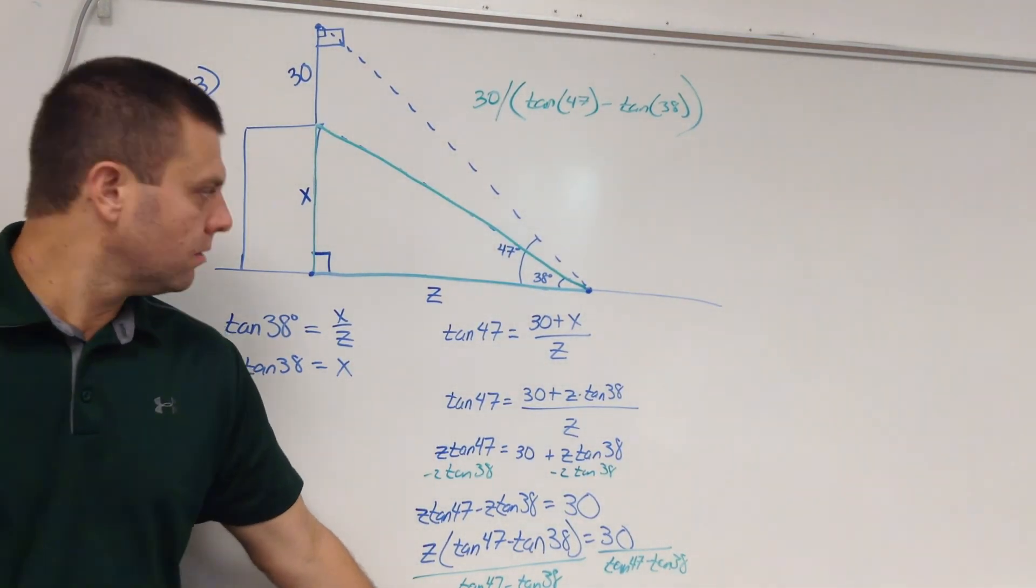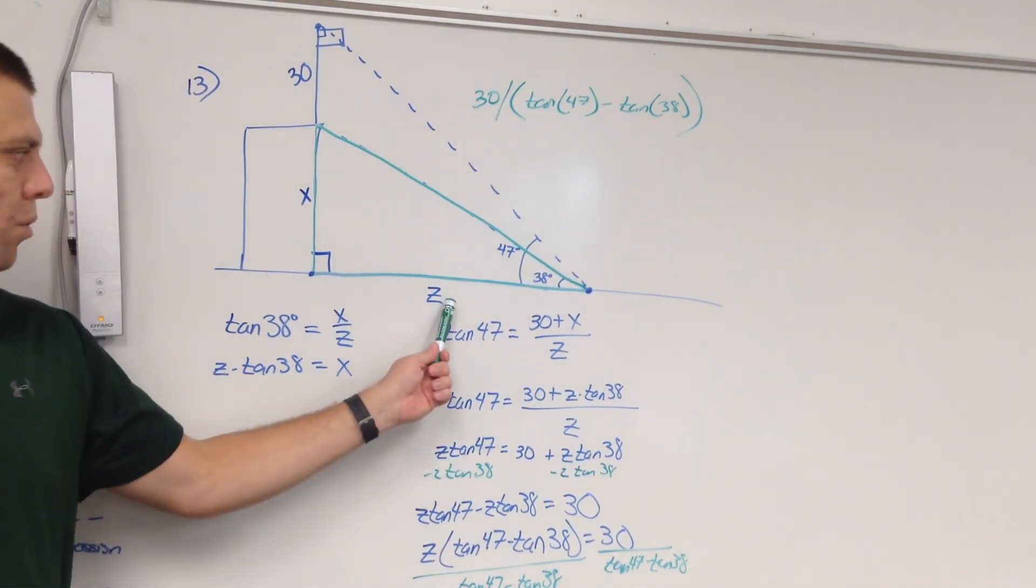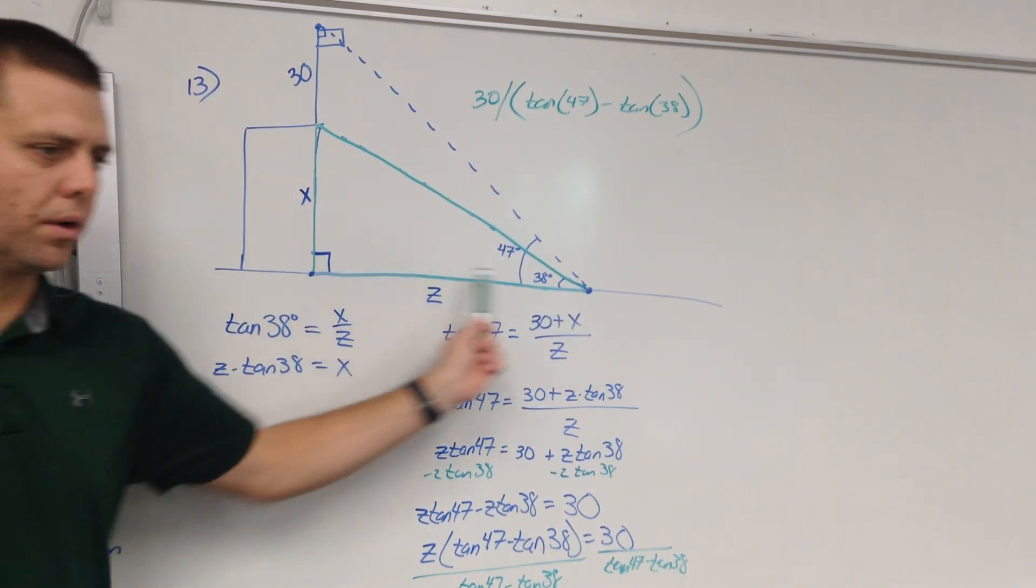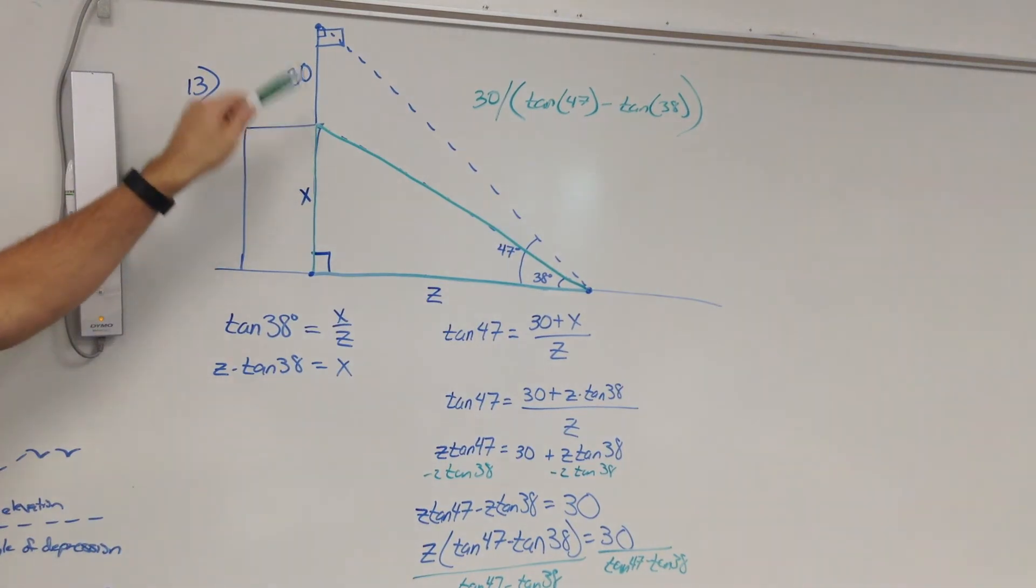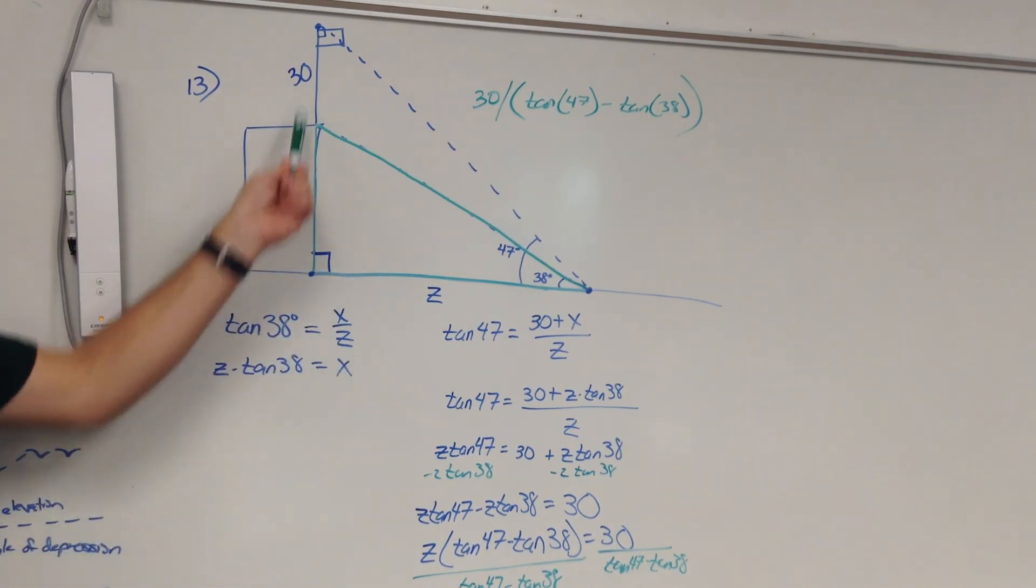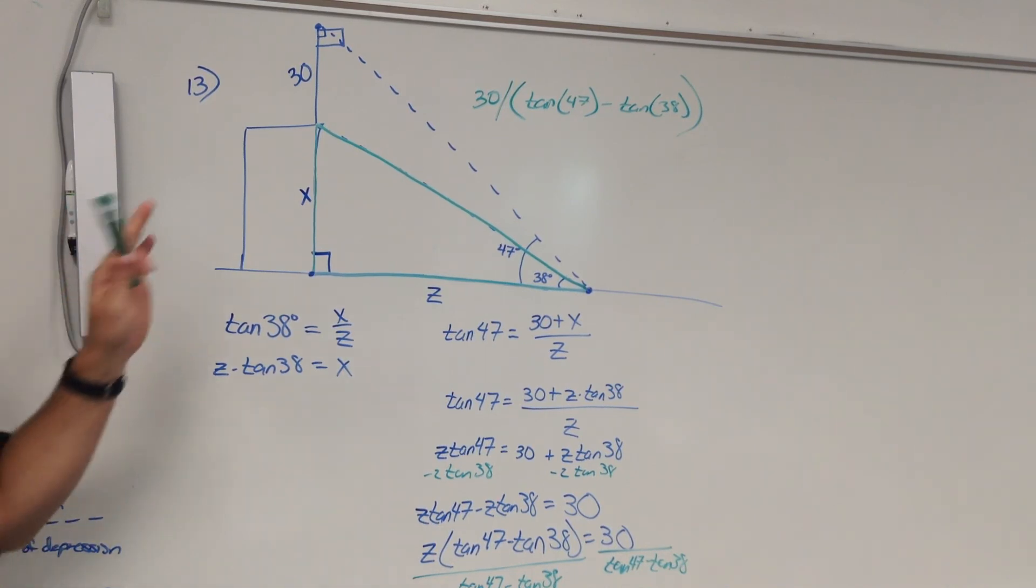Once you get what Z is equal to, remember that wasn't what was asked of us. We didn't want to know how far away from the building we were. We wanted to know the height of the building. We wanted to know the X value. So once you know what Z is equal to, you just take that number, substitute it right here in place of the Z, take it times the tangent of 38, and that will equal your X value, which is the height of your building. Questions in general on the process?